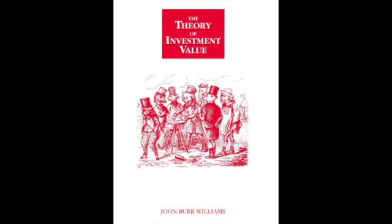To say that a 'premium for risk' is needed is really an elliptical way of saying that payment of the full face value of interest and principal is not to be expected on the average. This leads to the mathematical definition of the premium for risk as the value of x that will satisfy two equations. If the mean value V is known, the equation can be solved for i, the proper yield. Or, if i is known, the same equation can be solved for V. The problem can be approached in either way. Most people find it easier to think in terms of interest and principal at face value heavily discounted, rather than in terms of interest and principal at reduced value lightly discounted.